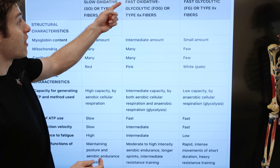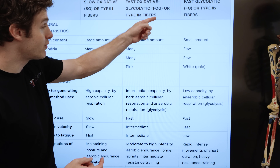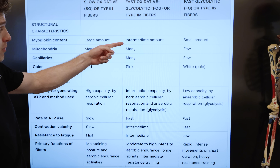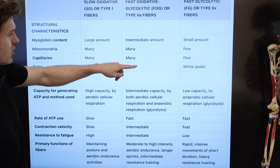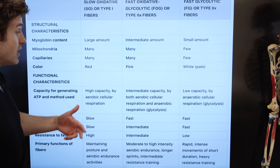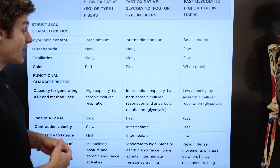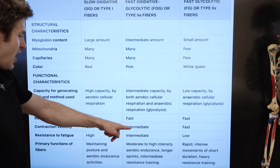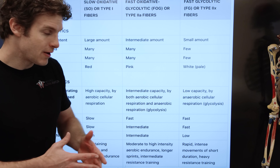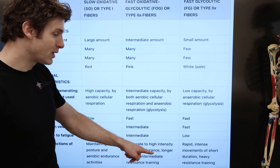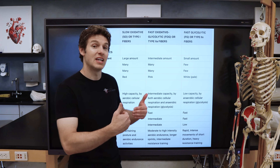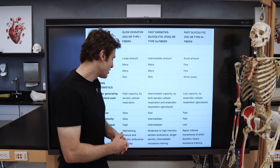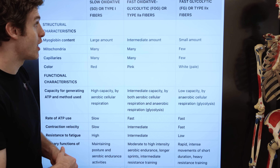The fast oxidative — sometimes called fast oxidative glycolytic or type 2A — fibers are our hybrids. They have an intermediate amount of myoglobin, a good amount of mitochondria and capillaries, and a pink color. They generate ATP through both aerobic respiration and anaerobic glycolysis, giving them a fast rate of ATP use, intermediate contraction velocity, and intermediate resistance to fatigue. These are great for moderate to high intensity aerobic endurance — think picking up your jogging pace, longer sprints like 200 to 400 meters, and intermediate resistance training.